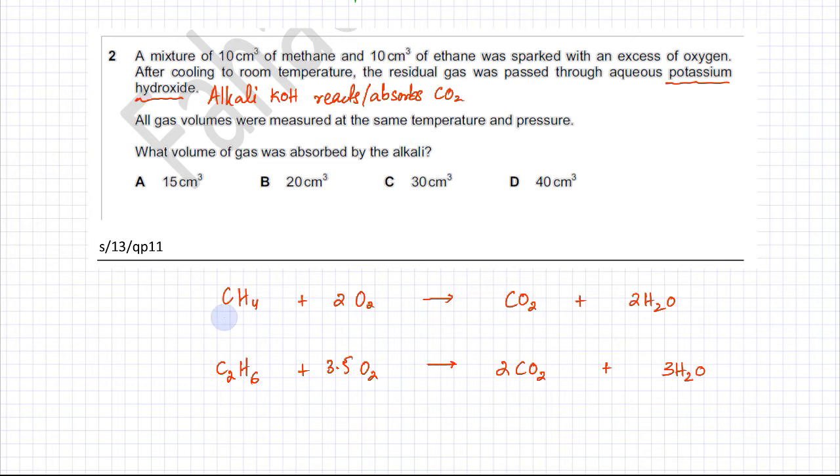We need to figure out the amount of carbon dioxide gas produced. Methane is 10 cm³ and ethane is also 10 cm³. One thing you must know is that for gases, mole ratio and volume ratio is exactly the same.